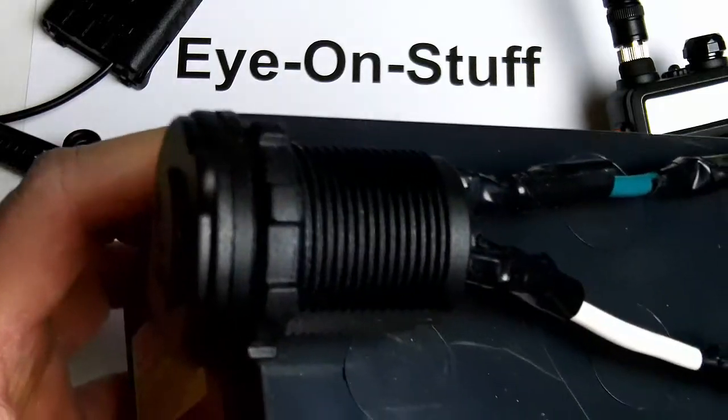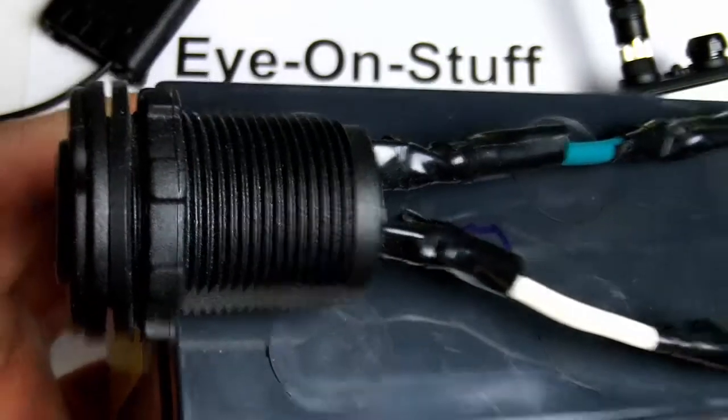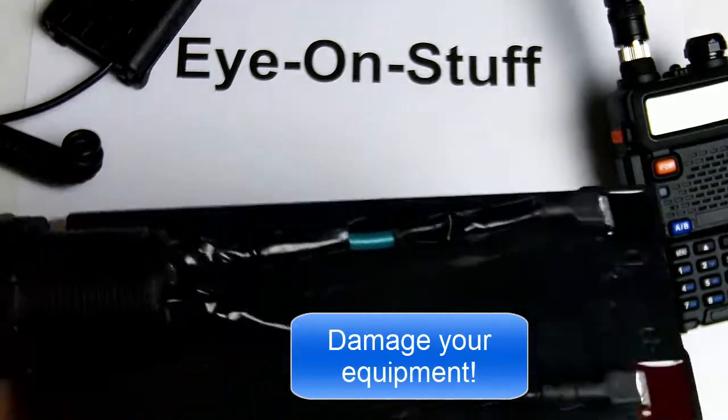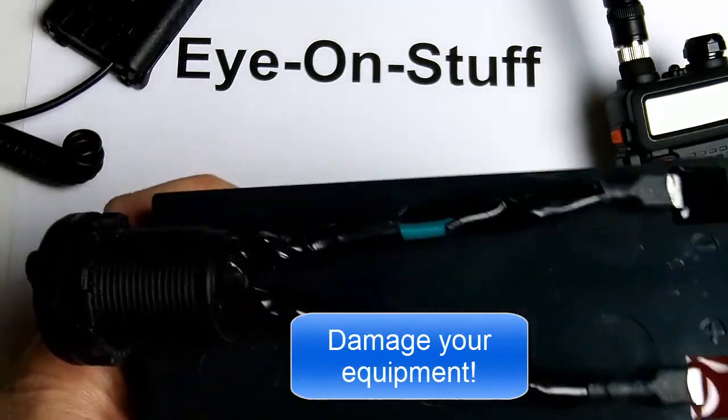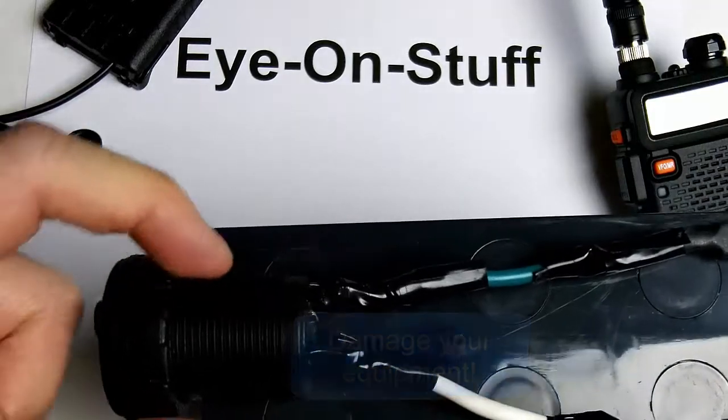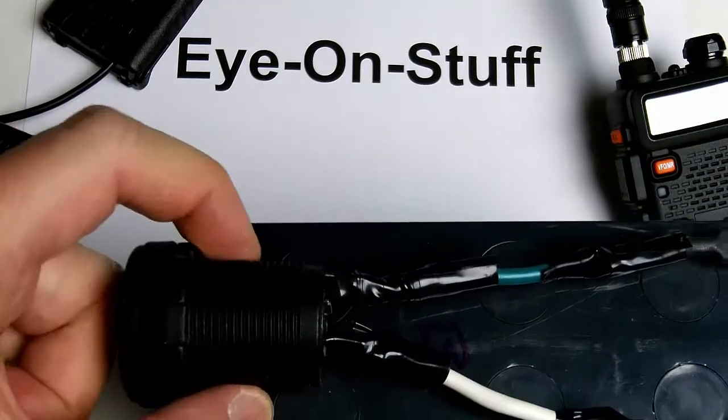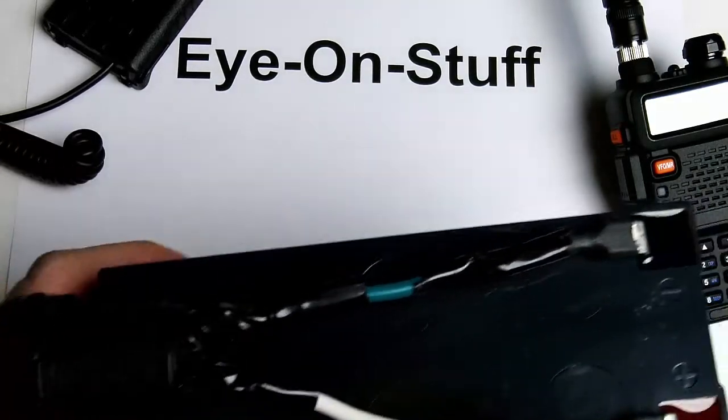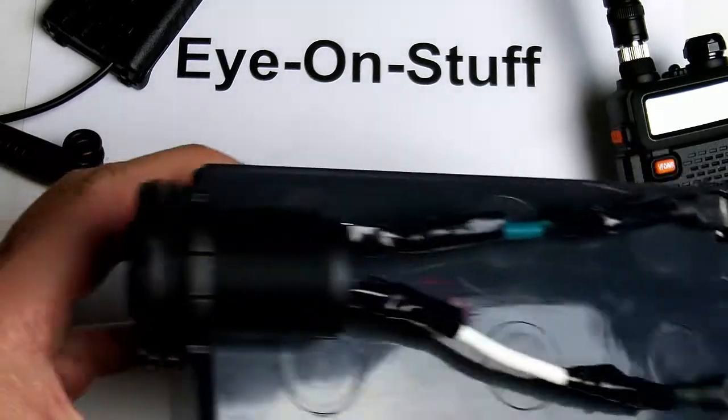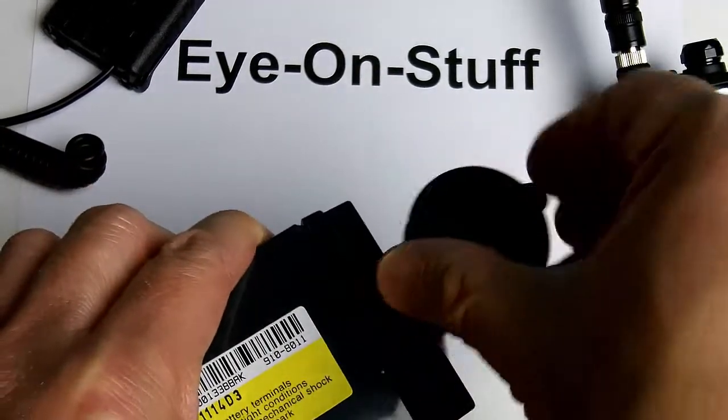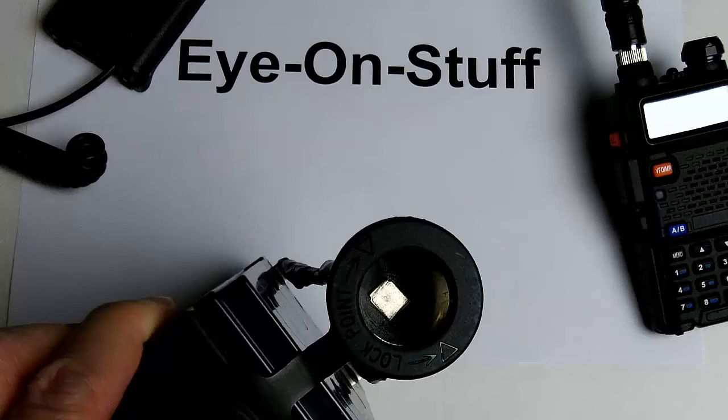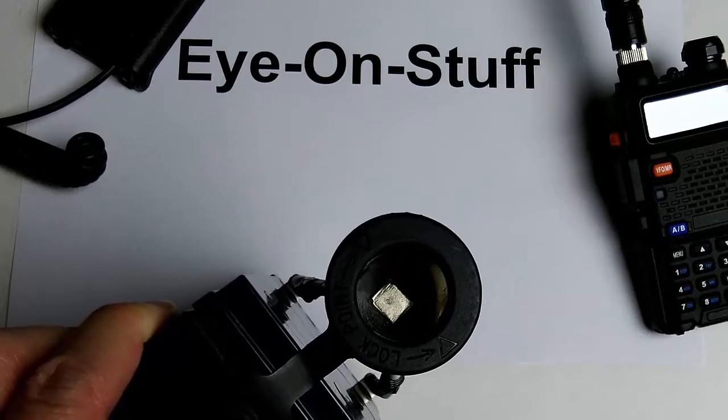Otherwise, you will blow up your devices. Basically, the outer connector, the tube, that is ground, and the center point is positive on this cigarette lighter socket. So you've got to make sure that the polarity is correct when you connect it up to the battery.